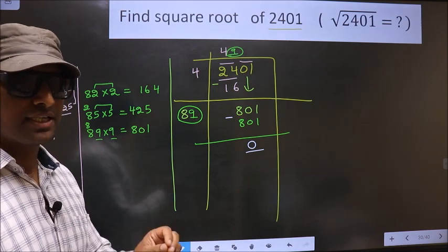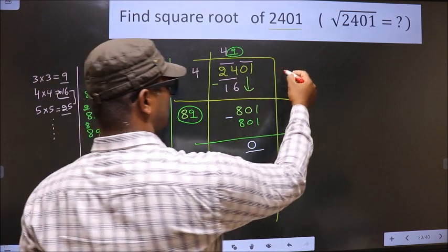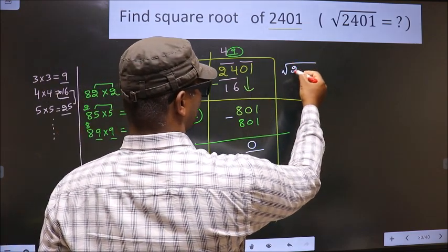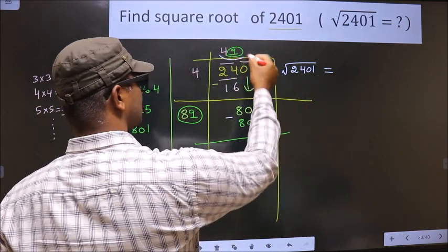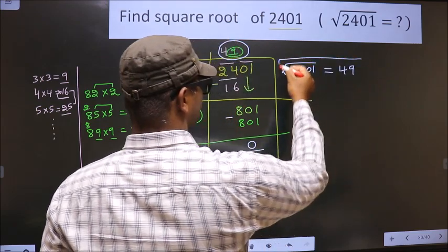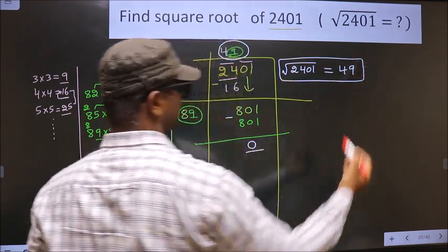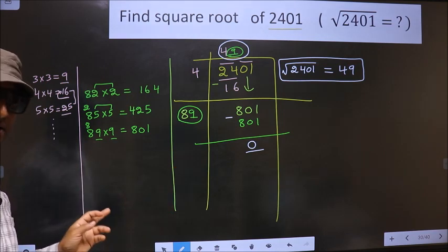That means given number is a perfect square. And the square root of 2, 4, 0, 1 is this number, that is 49. This is our answer.